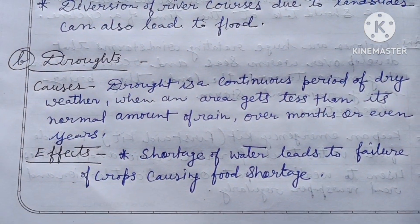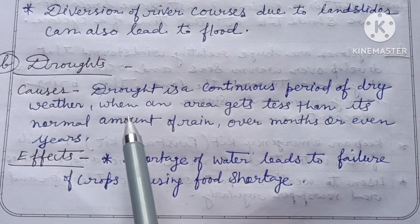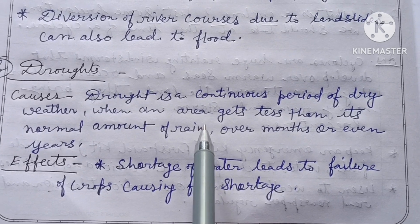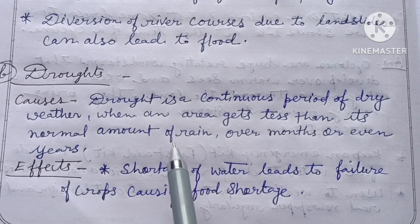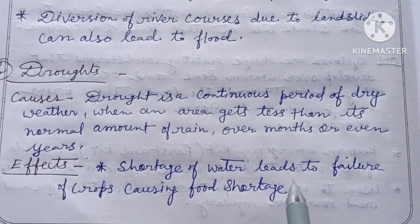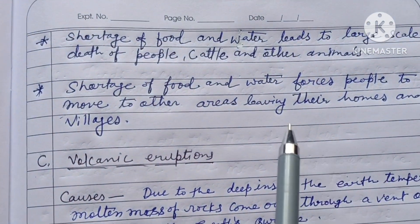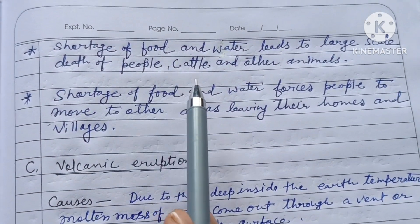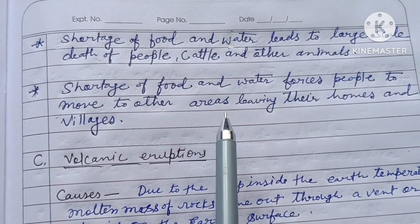Drought — causes: drought is the continuous period of dry weather when an area gets less than its natural amount of rain over months or even years. Effects: shortage of water leads to failure of crops, causing food shortage. Shortage of food and water leads to large-scale death of people, cattle, and other animals. It also forces people to move to other areas, leaving their homes.